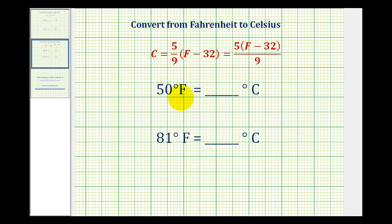So to convert 50 degrees Fahrenheit to Celsius, we'll replace F with 50 to determine C. So we'll have C equals 5 ninths times the quantity 50 minus 32.